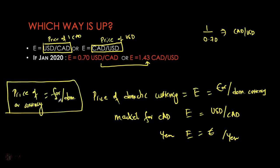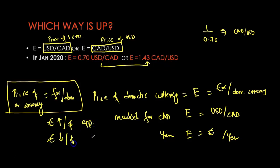Whenever the domestic currency is becoming more expensive, we know it is an appreciation. When the domestic currency is becoming cheaper — meaning you give up fewer units of foreign currency to get one unit of domestic currency — it is a depreciation. So the more euros you get for each Canadian dollar, it's an appreciation; the fewer euros you get, it's a depreciation. This keeps appreciation in sync with a higher numerical value and depreciation with a lower numerical value.